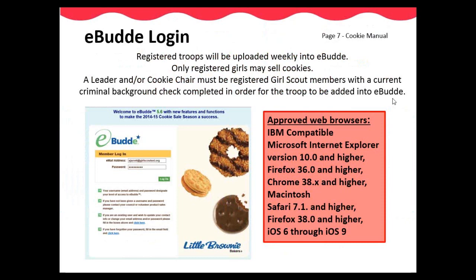Your email address is used to gain access to eBuddy. The login screen allows you to update your information including changing your email address, password, security questions, and personal information. We will do weekly uploads into eBuddy of troops, registered Girl Scouts, and adult leaders and/or cookie chairs. A leader and/or cookie chair must be a registered Girl Scout member with a current criminal background check completed in order for the troop to be added into eBuddy.